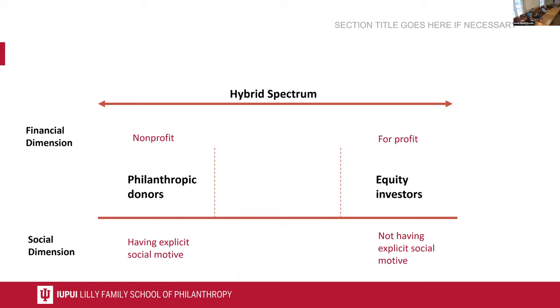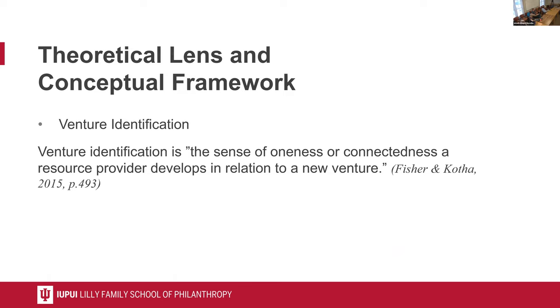From the resource provider side: philanthropy donors are non-profit oriented with explicit social motives. Equity investors are for-profit oriented without explicit social motives. The second theoretical lens we use is the venture identification concept, which holds that under uncertain and complex environments, resource providers make decisions more based on their own experiences.